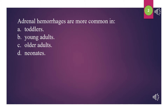What is the area of the kidney where the vessels and ureter enter and exit called? A. Renal cortex. B. Renal column. C. Renal hilum. D. Renal pelvis. Adrenal hemorrhages are more common in: A. Toddlers. B. Young adults. C. Older adults. D. Neonates. The answer is D: Neonates.